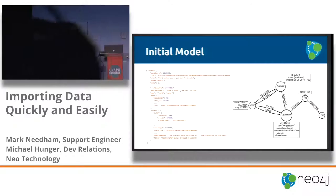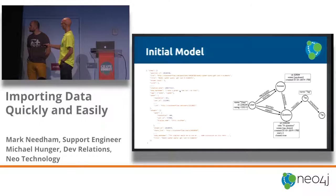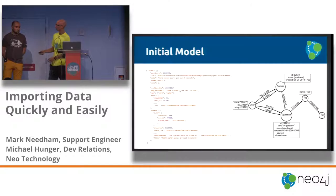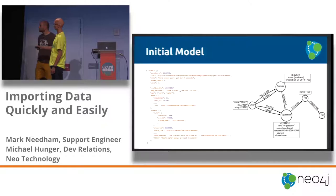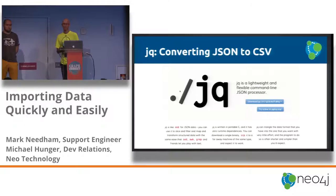This is the model using the Stack Overflow data. Everything starts around a question — you have a question with metadata like title, votes, and creation date. It has relationships to users: a user can ask a question, and if they go back and edit it, we'd add an edited relationship. Then there are answers — the answer answers a question, and again you've got a user interacting with that answer. Questions can be tagged, and tags can have synonyms where two tags mean the same thing.